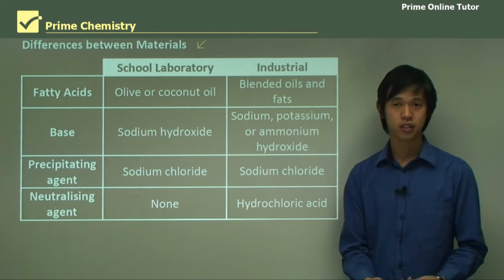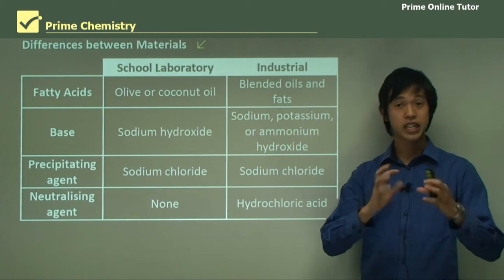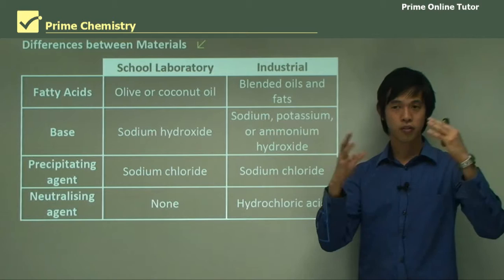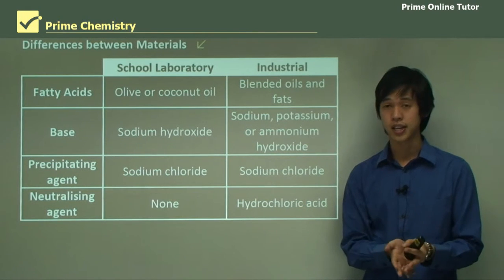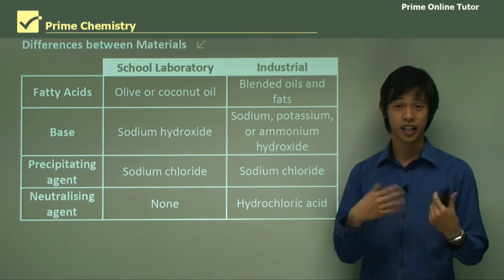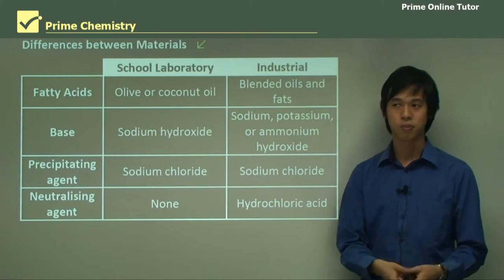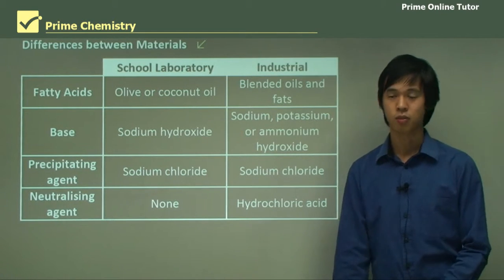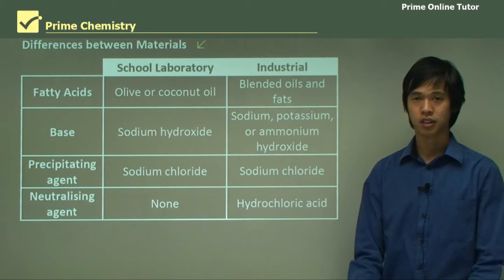So we've covered today the industrial processes that go into making soap. On top of the transesterification process from the previous lesson, we've looked at the different aspects of soap making and the chemistry behind them. Hopefully you've learned something about the soap industry, and we'll move on to the question segment to see if you can put all these things together.